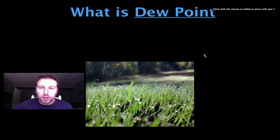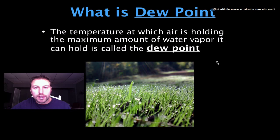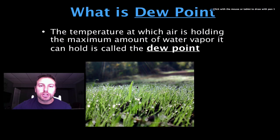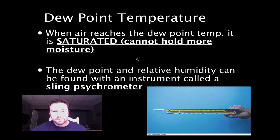Another term we need to be familiar with is the dew point. The dew point is the temperature at which air is holding the maximum amount of water vapor it can hold. For instance, if the dew point temperature is 12 degrees Celsius and the air temperature drops to 12 degrees Celsius, the air becomes fully saturated and has reached its dew point — it cannot hold any more water. During summer, we often see dew on the grass because overnight temperatures drop, making the air more saturated, and water condenses on the grass.